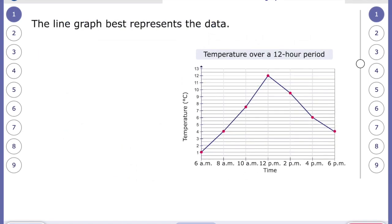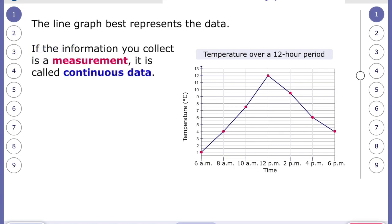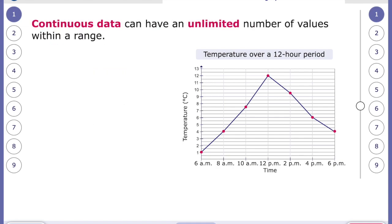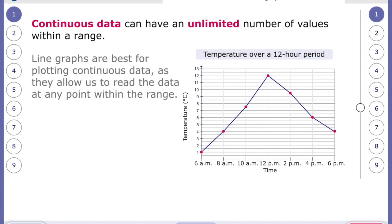So yes that's right, a line graph best represents the data for the following reasons. If the information you collect is a measurement it is always called continuous data. So for example temperature, the speed of a car, the height of a plant. These are all continuous data and they can have an unlimited number of values within a range.